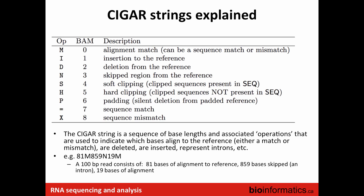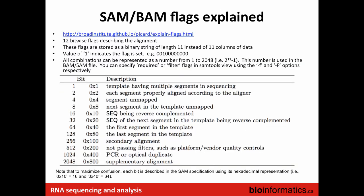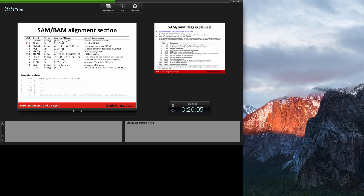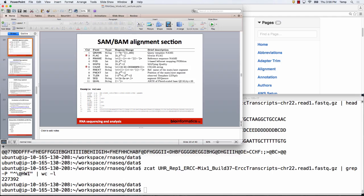Regarding the flag value of 99 from the example — it's a combination of different quality metrics. There's a website where you can put in the number and it will break it down, telling you what combination of metrics it represents. It could be first read, properly paired, passing quality filters, all combined into one score. Let me search for it — 'CIGAR flags explained' — and here it is, provided by Picard. You put in the flag value, in this case 99, and it tells you what combination of metrics it comes from.